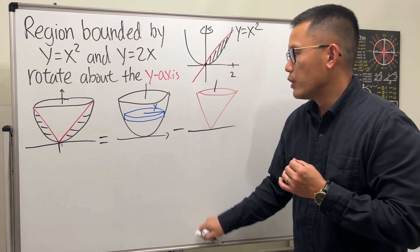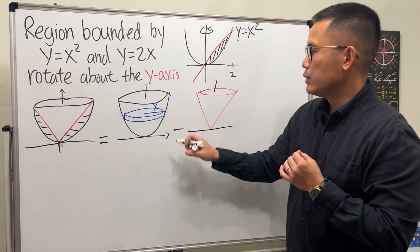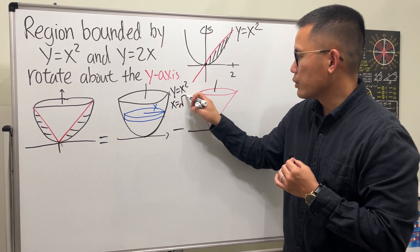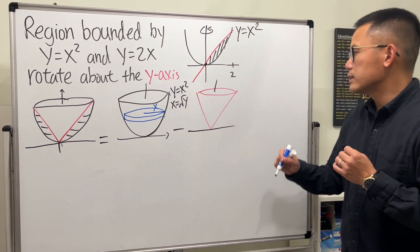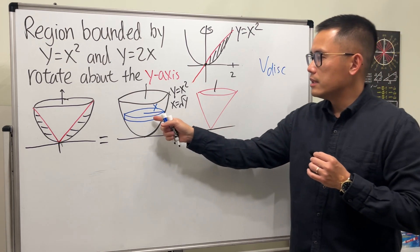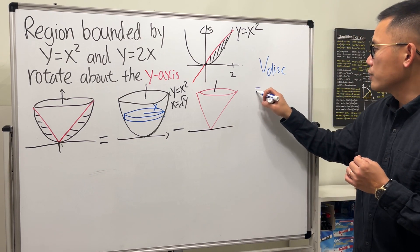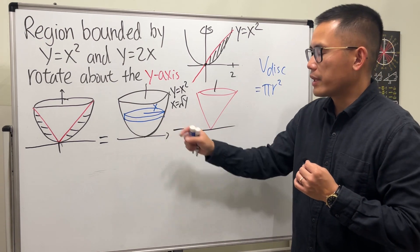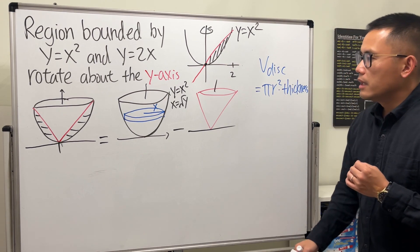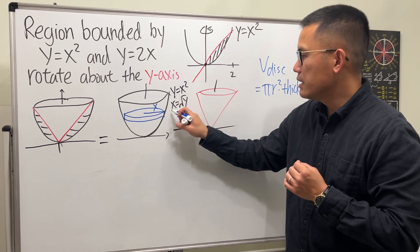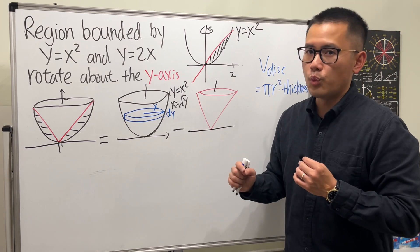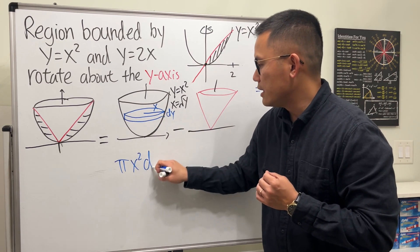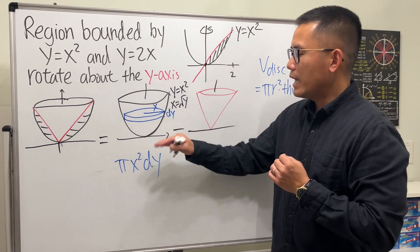The trouble is we need x in terms of y. From y equals x squared, take the square root of both sides to get x equals the square root of y. The volume of a disk is pi r squared times height — since the disk is very thin, we call the height the thickness. The radius is x and the thickness is dy, so the volume of this disk is pi times x squared times dy.